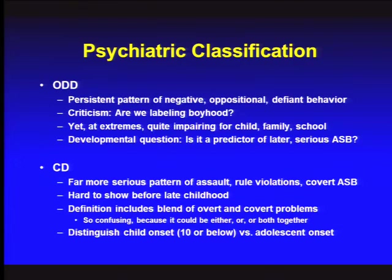Unless you're in abject poverty doing this to survive, or just following the social norm of a group, that's the mental disorder called conduct disorder. These are much more serious antisocial behaviors. It makes a big difference whether you start exhibiting these behaviors at age 6, 7, 8, 9, or 10 versus as a preteen or teen. There's something about very early childhood conduct disorder that seems different from a more normative adolescent conduct disorder.